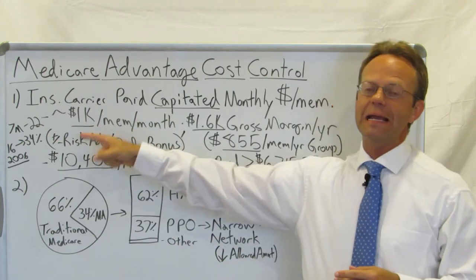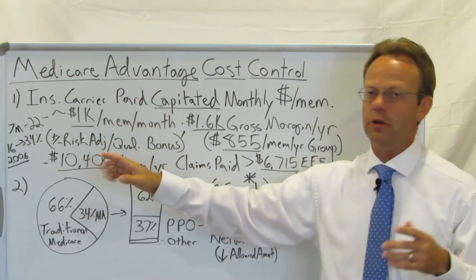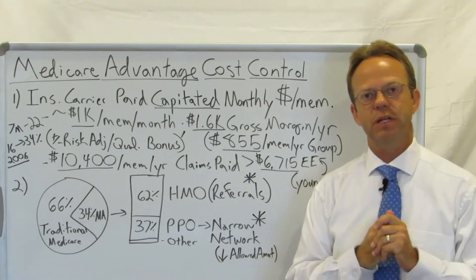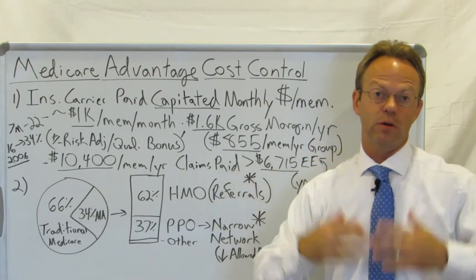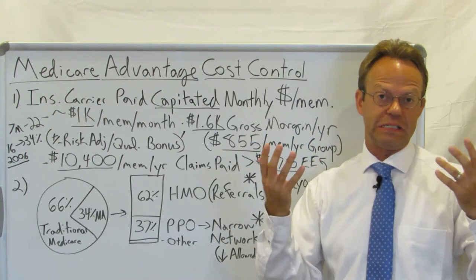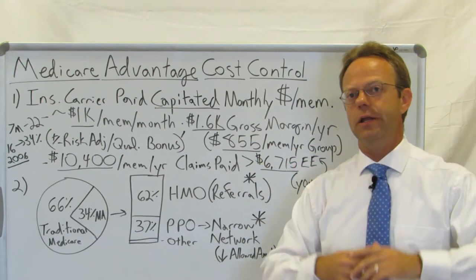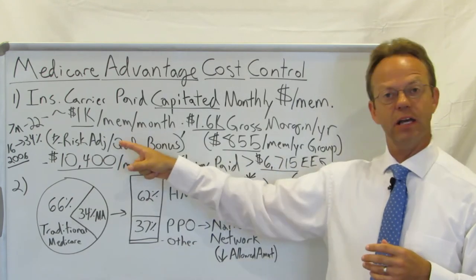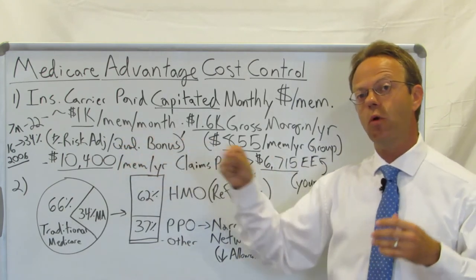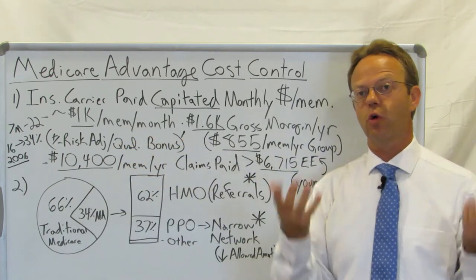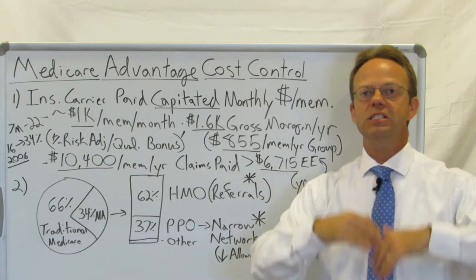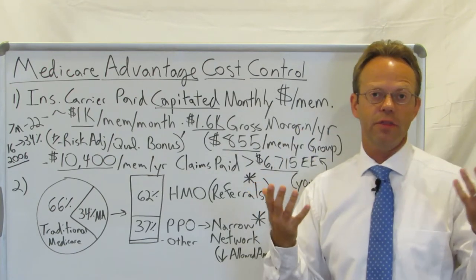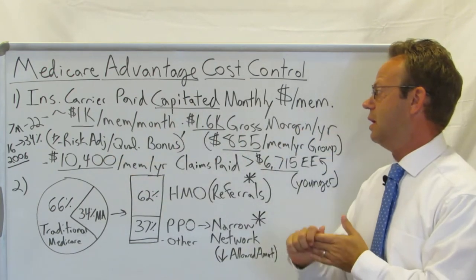That amount can go up and down somewhat based upon what's referred to as risk adjustment. In other words, they pay them more for folks that have more diseases, like bad diabetes. The government also pays them more if they achieve certain quality bonuses. So just know that it can be somewhat above or below $1,000 a month based upon those additional factors.